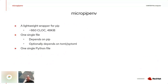Micro pipenv on its own is a very lightweight wrapper for pip — about 900 lines of code, or 1200 if you count comments. Everything is implemented in one single Python file. Micro pipenv has two dependencies: pip, as it relies on pip's internal logic, and toml (or python-toml), which is an optional dependency used for parsing Pipfile or poetry-specific files written in TOML language. TOML is not yet in the Python standard library, but there are discussions to include it.